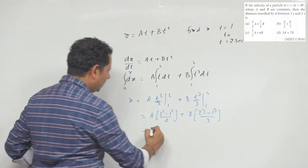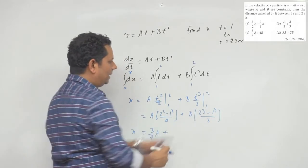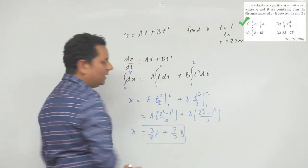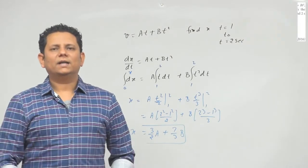Plus here it becomes 8 minus 1 which is 7 by 3 B. This is your final answer, so based on this sum you can say that option number A would be the right answer.